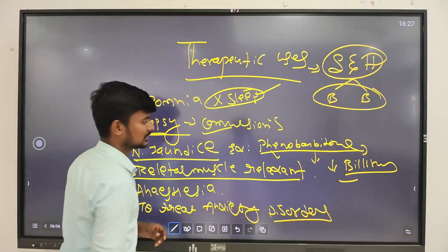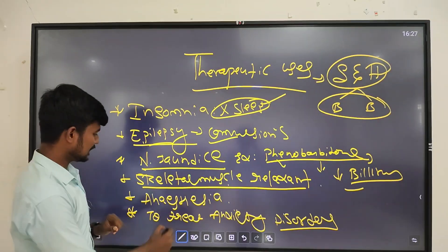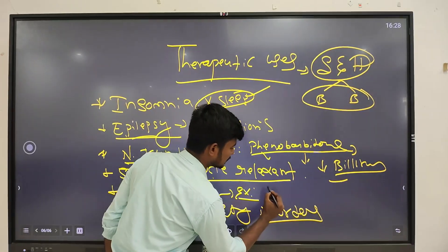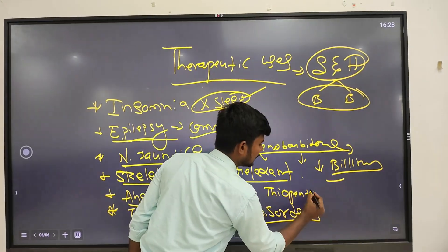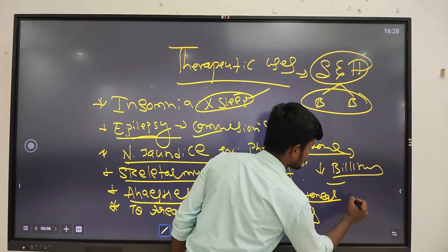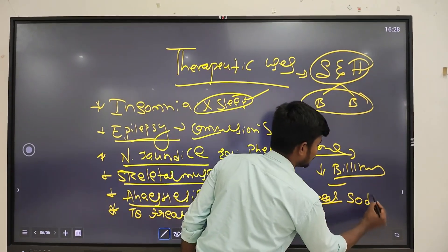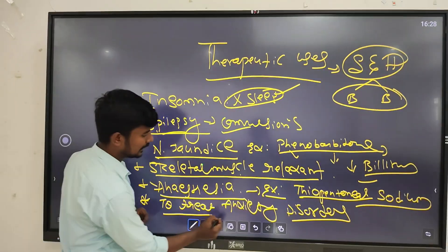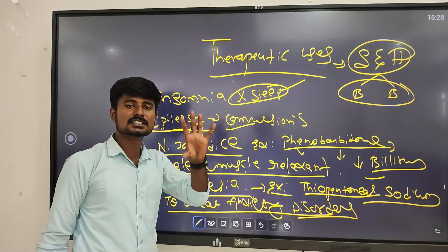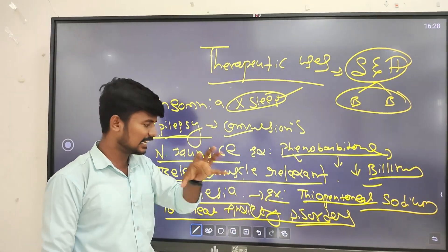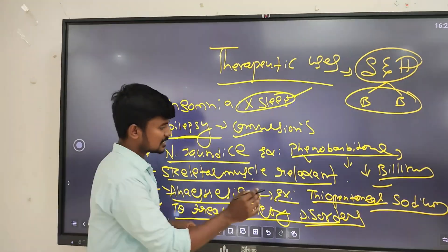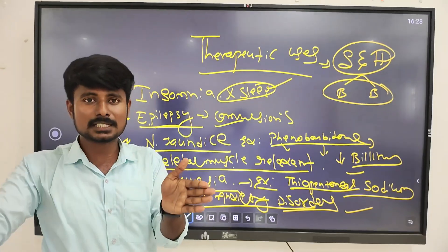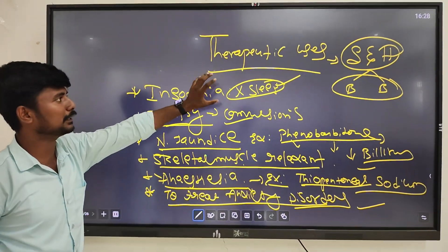Skeletal muscle relaxant and anesthesia: the example is thiopentone sodium. In the operation theatre, thiopentone sodium injection is used. It is useful in OT - thiopentone sodium injection. To treat anxiety disorders: sedatives and hypnotics are administered to reduce the anxiety state for a particular time.